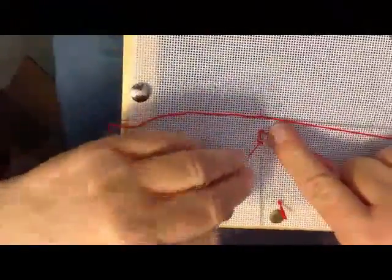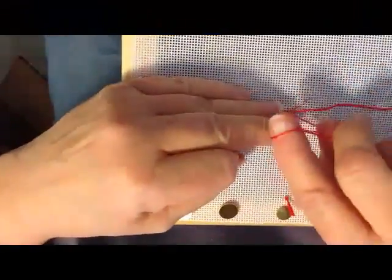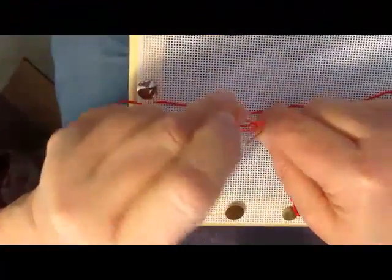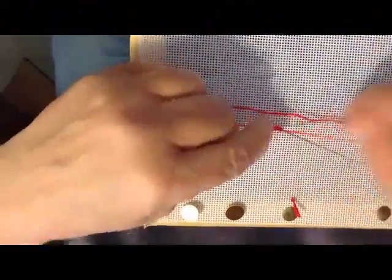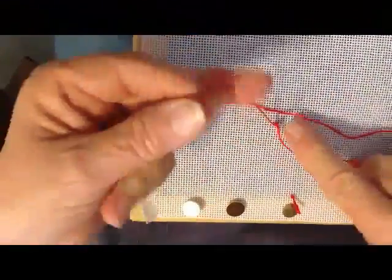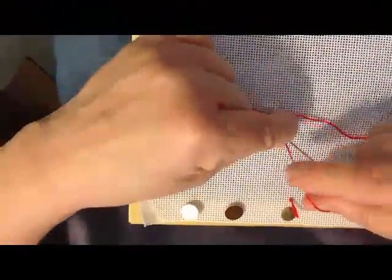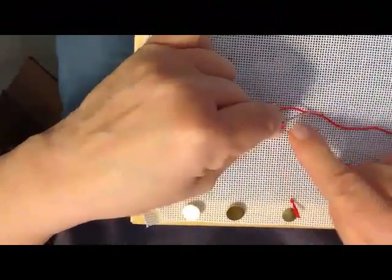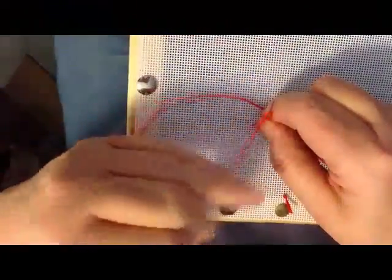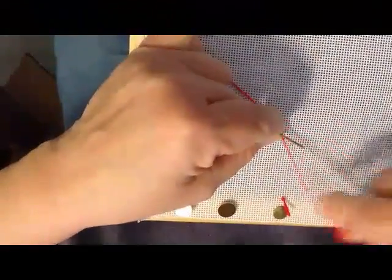The nice thing about these bullion needles is that they're very long and don't have really sharp points, so you won't get your fingers scratched. Just keep going back and forth, pulling your thread snug to the needle and down towards the canvas. If you have a lot of these to do, you might want to stick the eye of the needle into a wine cork to stabilize it so it won't slide around.